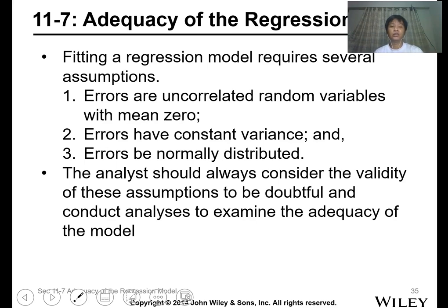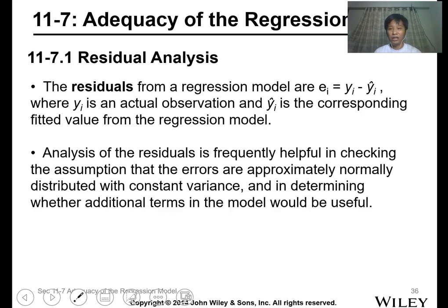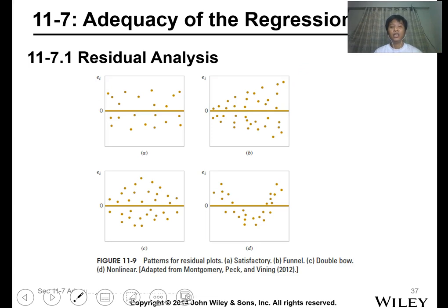The adequacy of the regression model—fitting a regression model requires these assumptions: errors are uncorrelated random variables with mean zero, errors have constant variance, and errors are normally distributed. The analysis should always validate your assumptions. We have residual calculation, and usually we do residual plots. We have patterns of residual plots, and the pattern we want is A because it's satisfactory, meaning randomized data.